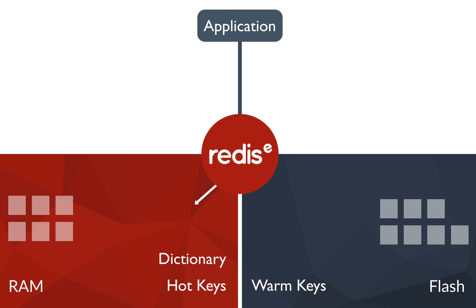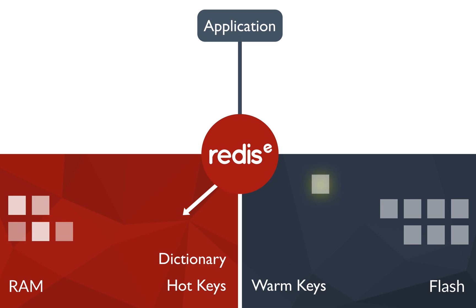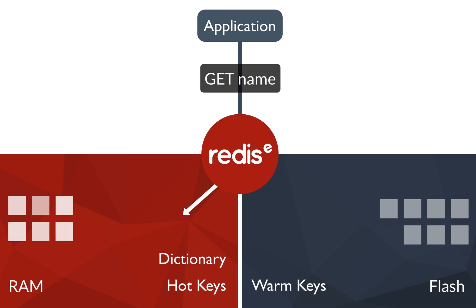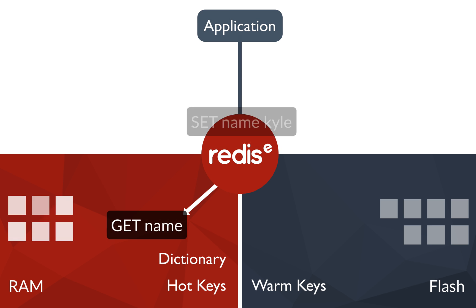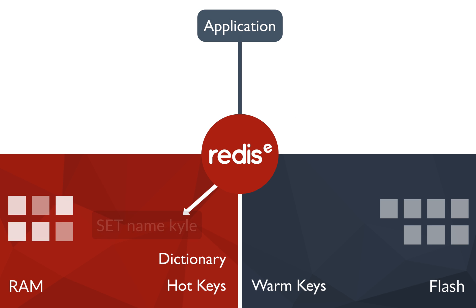It's important to understand that Redis on Flash never serves or writes directly to the SSD. If a warm key is requested, space is made in RAM by moving the coolest of the data into Flash, and then the requested data is migrated into RAM from Flash. Finally, the keys are manipulated as normal in RAM.